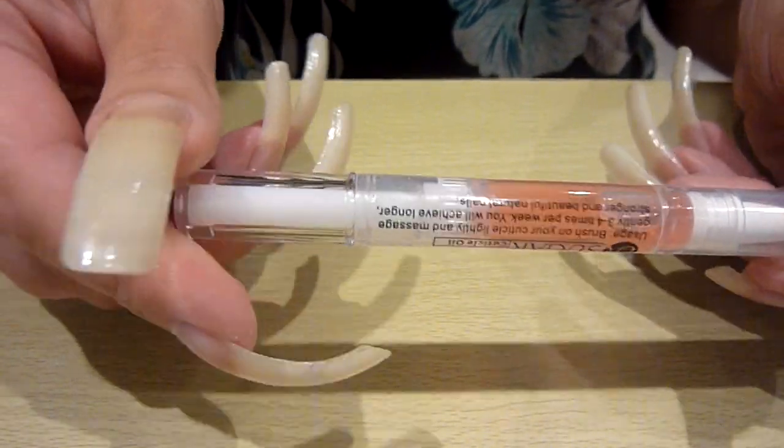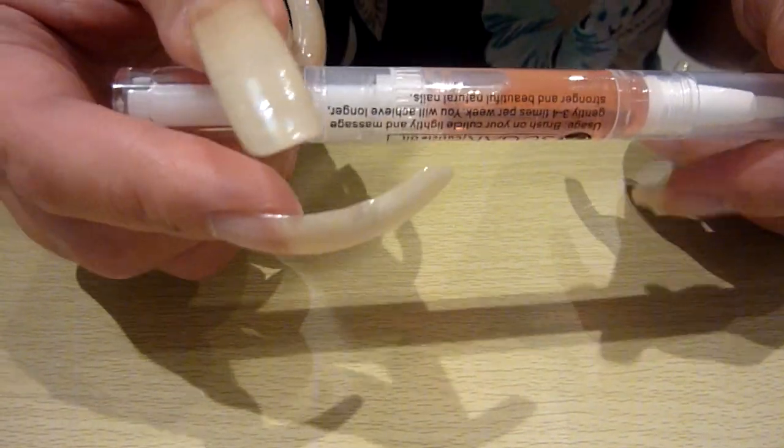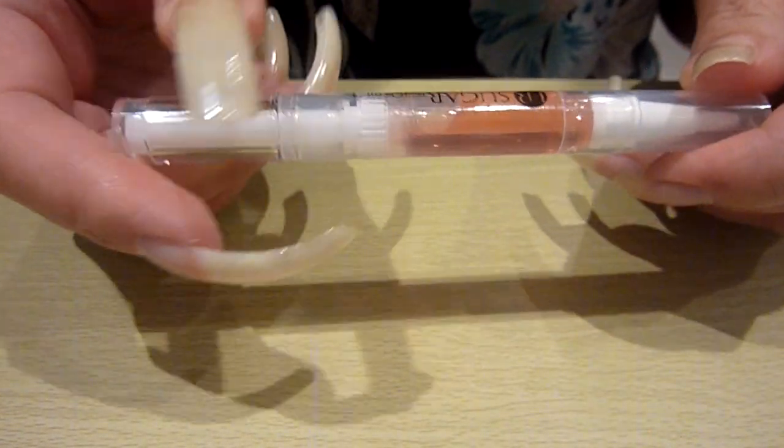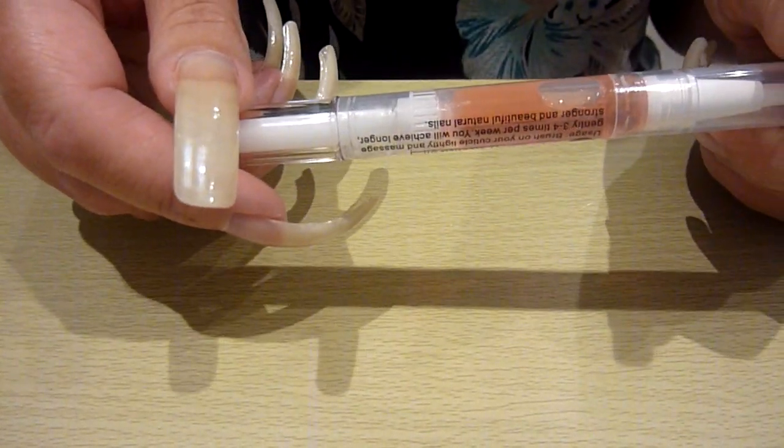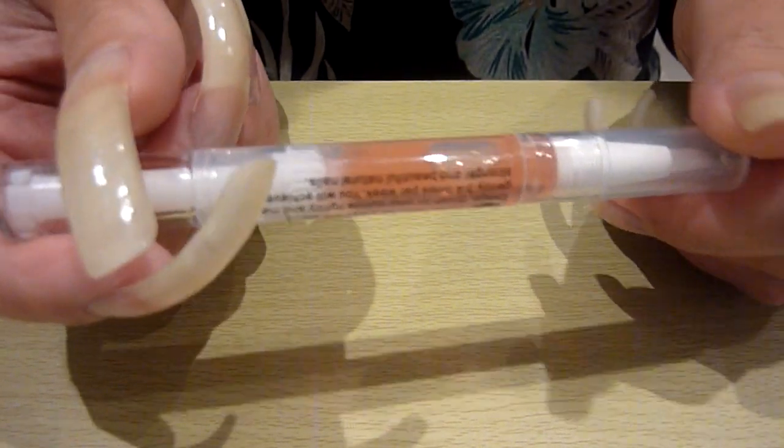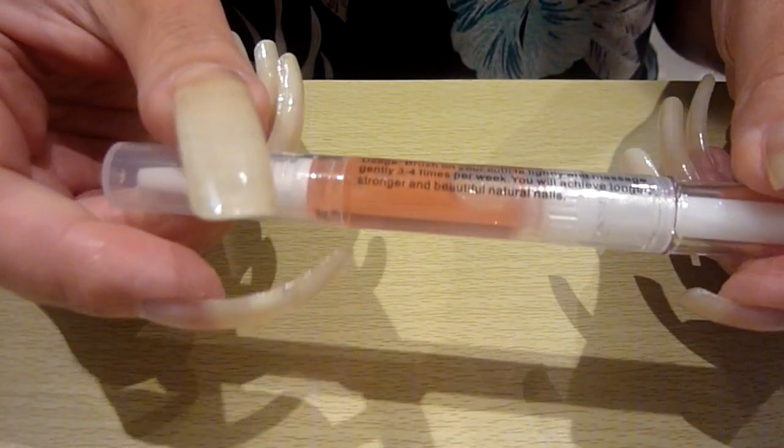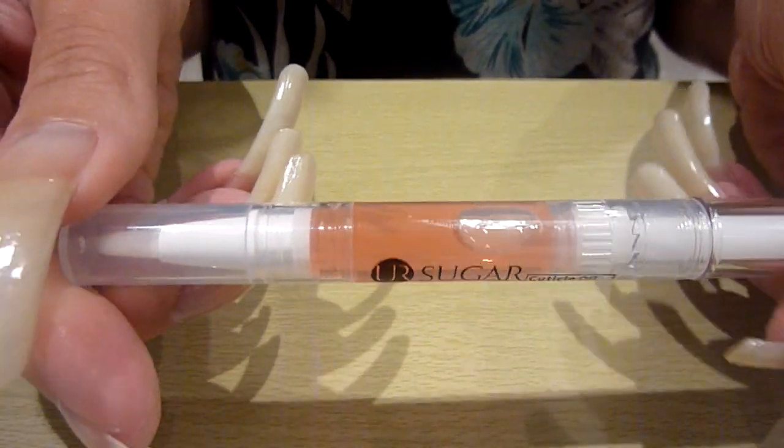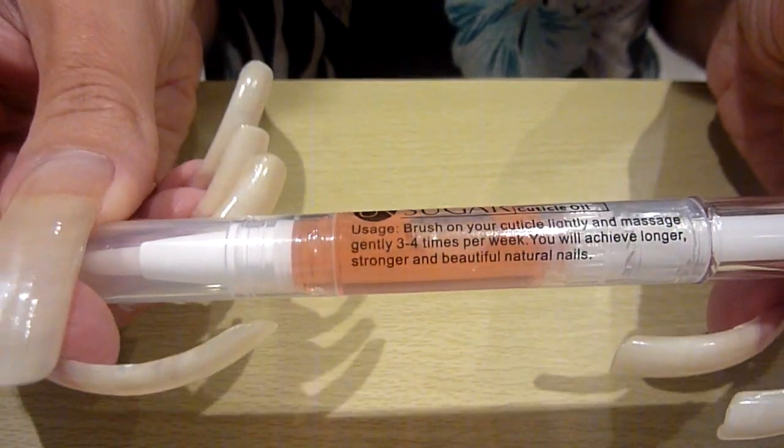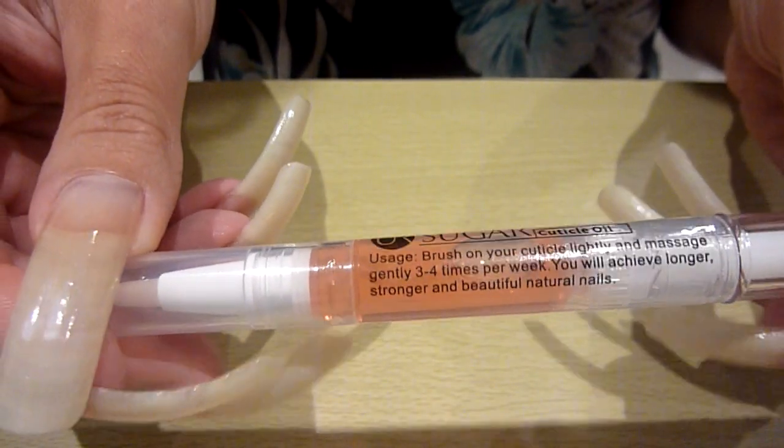This one is, let's have a look. What's the code on this one? I've got it here. It's 46977. And it's UR01. And that's a lovely rose aroma smell one.